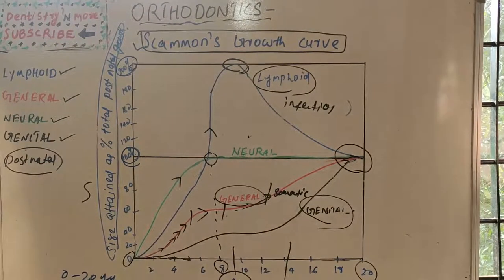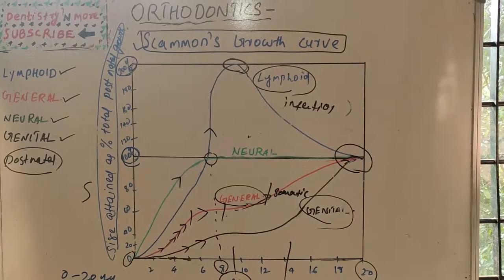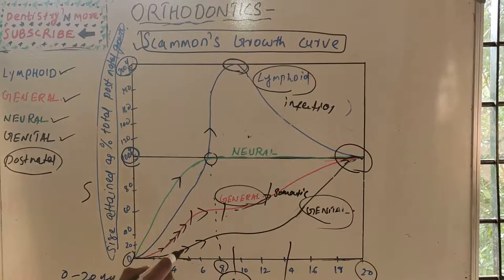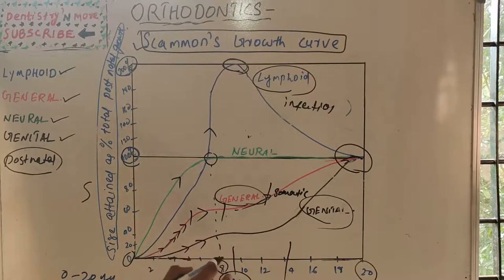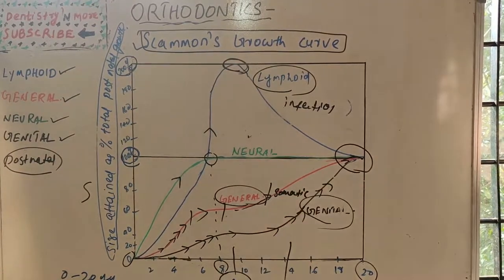The genital curve is a little different. It is associated with the primary sex apparatus — ovary, testis — and secondary sex characters and traits. It has a very small rise in the first year of life, then is almost flat until ten years, after which it goes on increasing, and by twenty years it reaches the adult size.